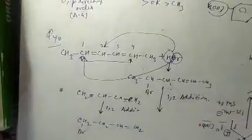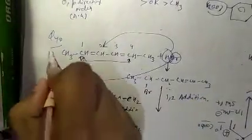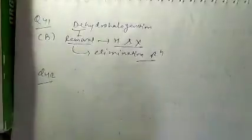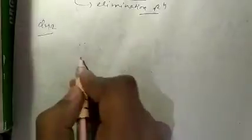Question number 41 is about dehydrohalogenation. Dehydrohalogenation means removal of hydrogen and halogen from an alkyl halide. This is an elimination reaction. So question number 41 option B is correct.